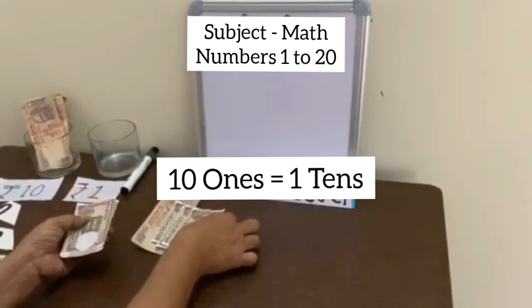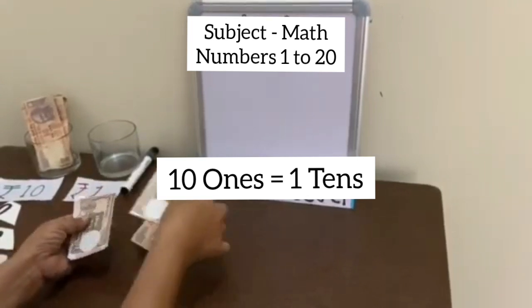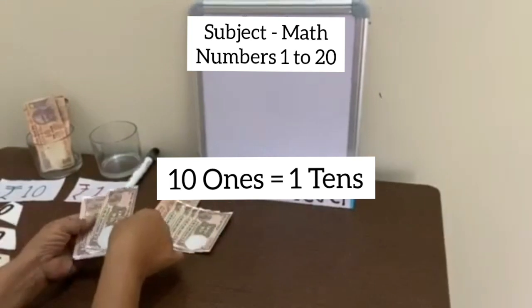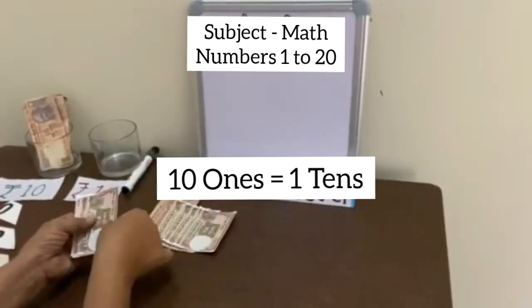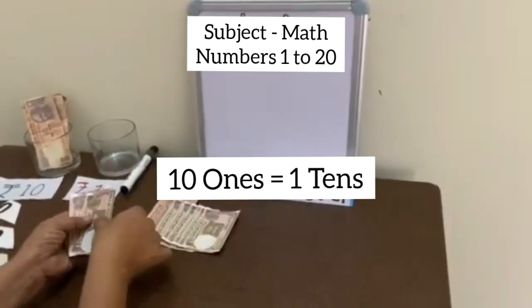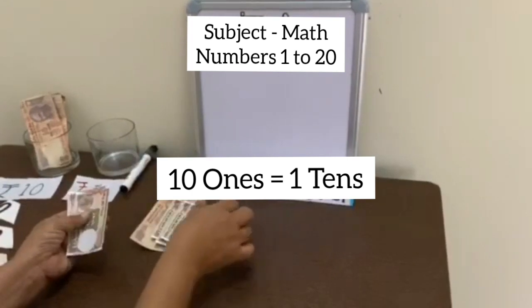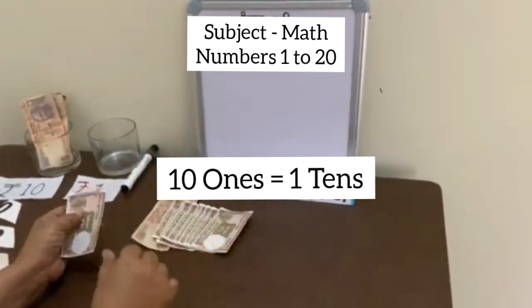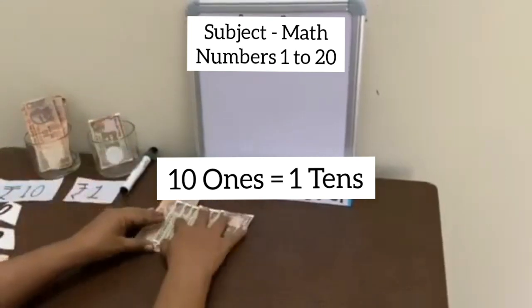Now we add 1 note more. 14, 15, 16, 17, 18, 19. Now let us see how we will write 19.